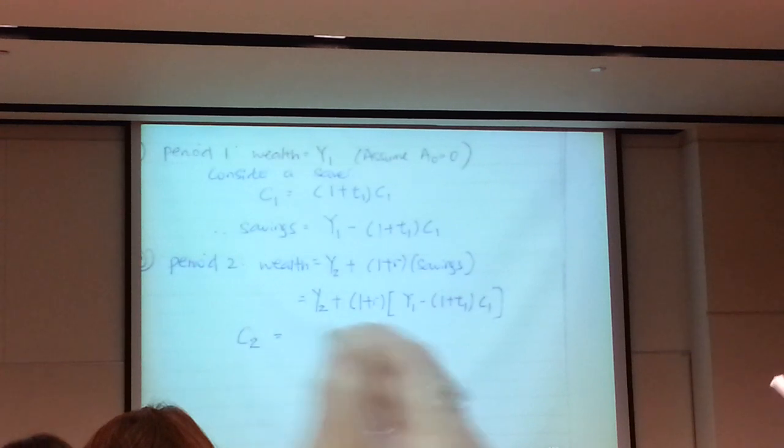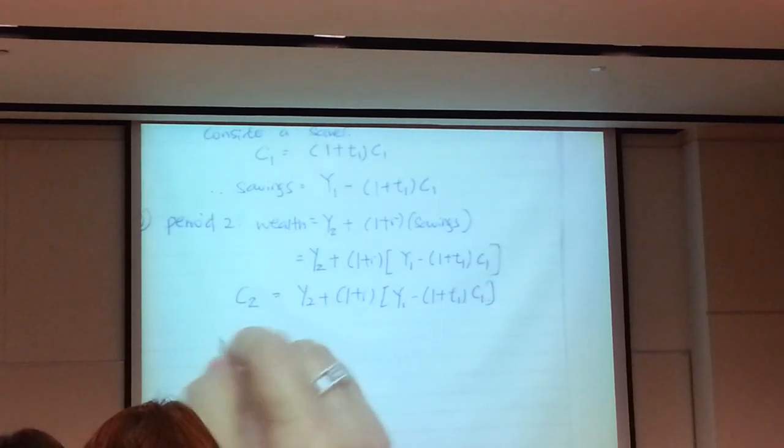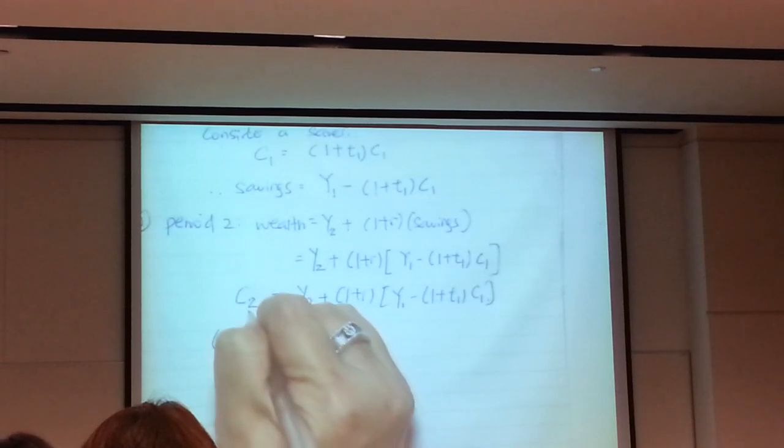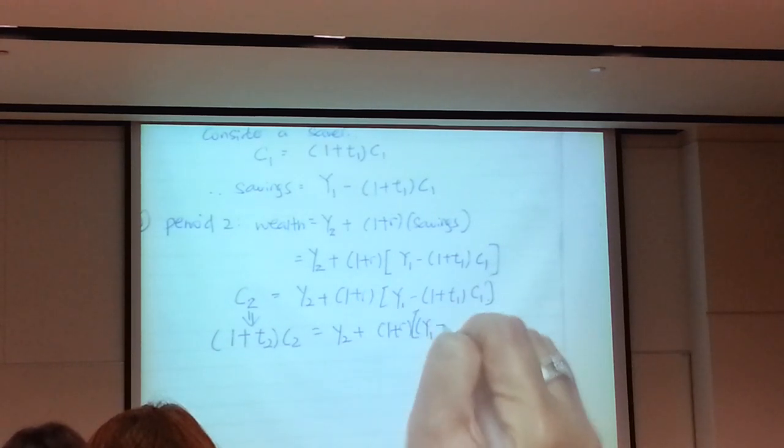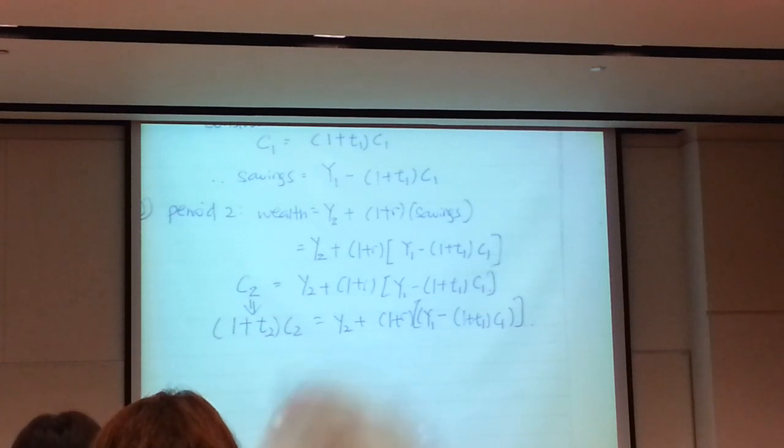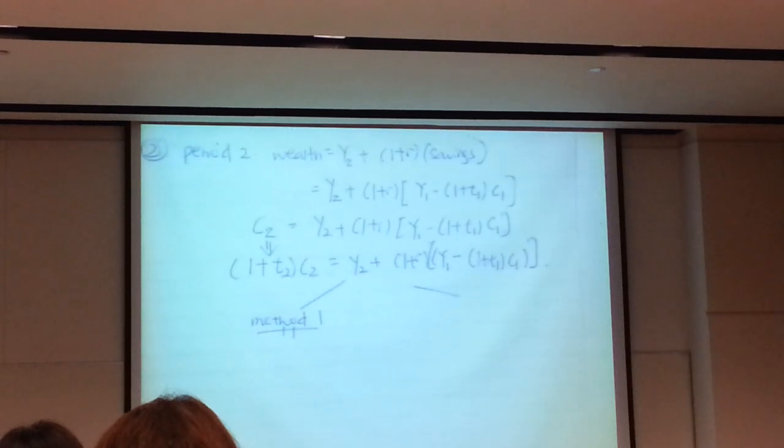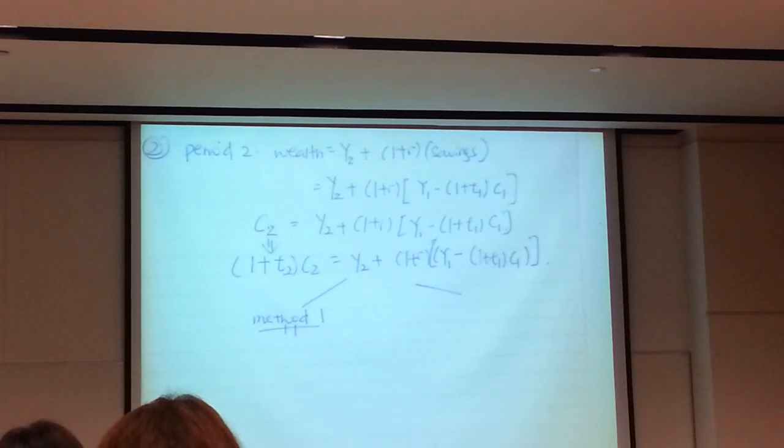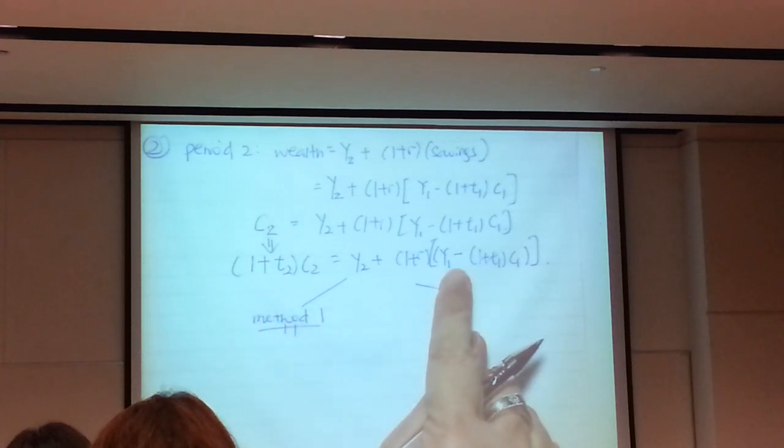But in period 2, we will examine the person's wealth. Wealth at that period, be careful, it's Y2. You earn income Y2. That's why you mark it on your vertical axis. But on top of that, you earn interest with your savings. So you have 1 plus R times your savings, which you accrued in period 1. So you substitute in, you will get Y2. So the equation will now look quite complicated. Y1 minus 1 plus T1, C1.